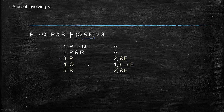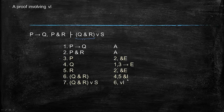So what this proof looks like: you go P by line 2 and AND elimination; Q by lines 1 and 3, conditional elimination — if P then Q, P, therefore Q. And then you need to put R on a line by itself, again from line 2 by AND elimination. Then you put them together: Q and R by lines 4 and 5, AND introduction. And then add in S with our new rule: Q and R or S by OR introduction. So that's our little proof involving OR introduction.